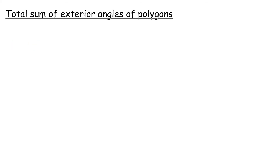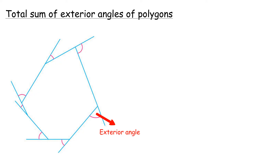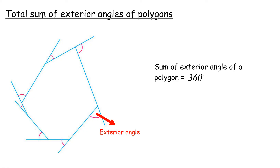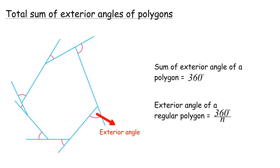Total sum of exterior angles of polygons. An exterior angle is an angle formed when one side of the polygon is extended. It is the supplementary angle to the interior angle of the adjacent side. The total sum of exterior angles of a polygon is 360 degrees. The exterior angle of a regular polygon equals 360 degrees divided by the number of sides N.